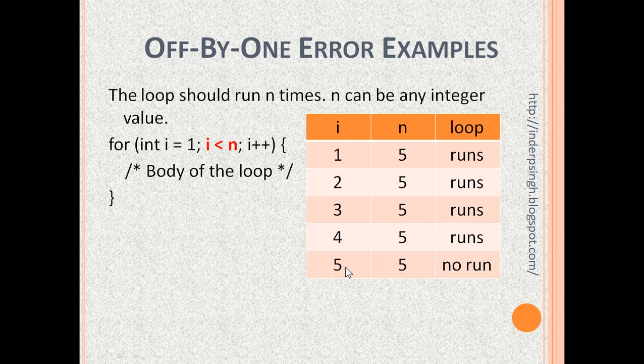The loop should have run 5 times because n is 5, but it runs only 4 times: 1, 2, 3, 4. In other words, if the loop should run n times, it runs only n minus 1 times. The error is in the condition i less than n.